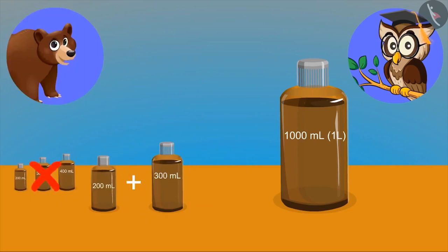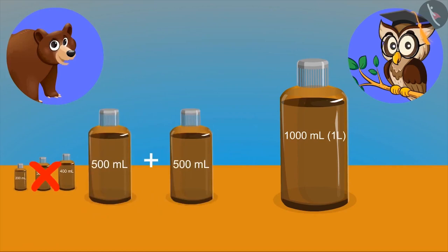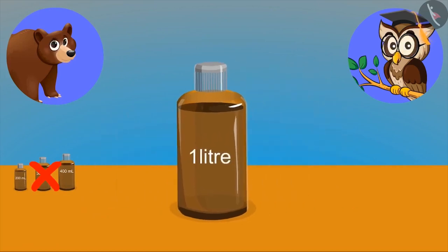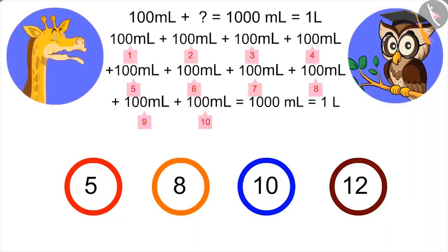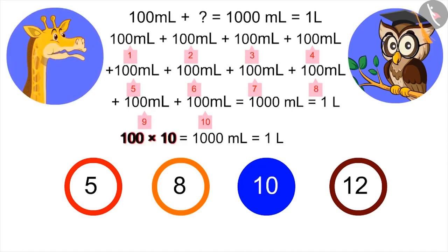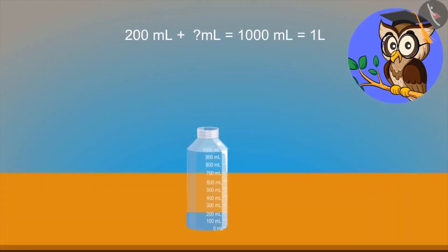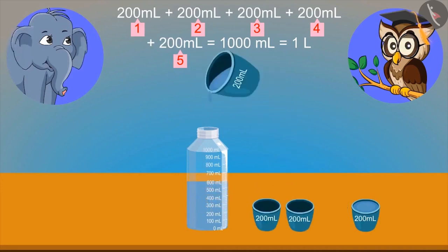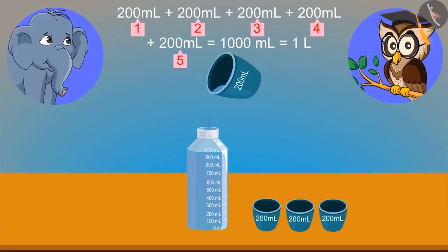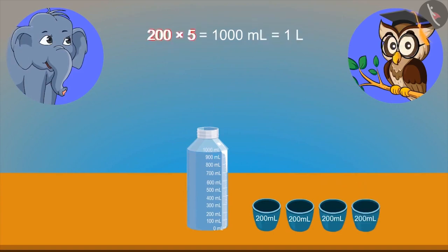Now tell how many 100 ml will add up to 1 litre? Adding 100 ml up to 10 times makes 1000 ml — means 10 multiplied by 100 ml gives 1 litre. Now answer one more question: this bottle contains 200 ml of water. How many times should 200 ml bottles be added to give 1000 ml of water? Adding 200 ml for 5 times gives 1000 ml or 1 litre. Very good, elephant. 5 times will make 1 litre.